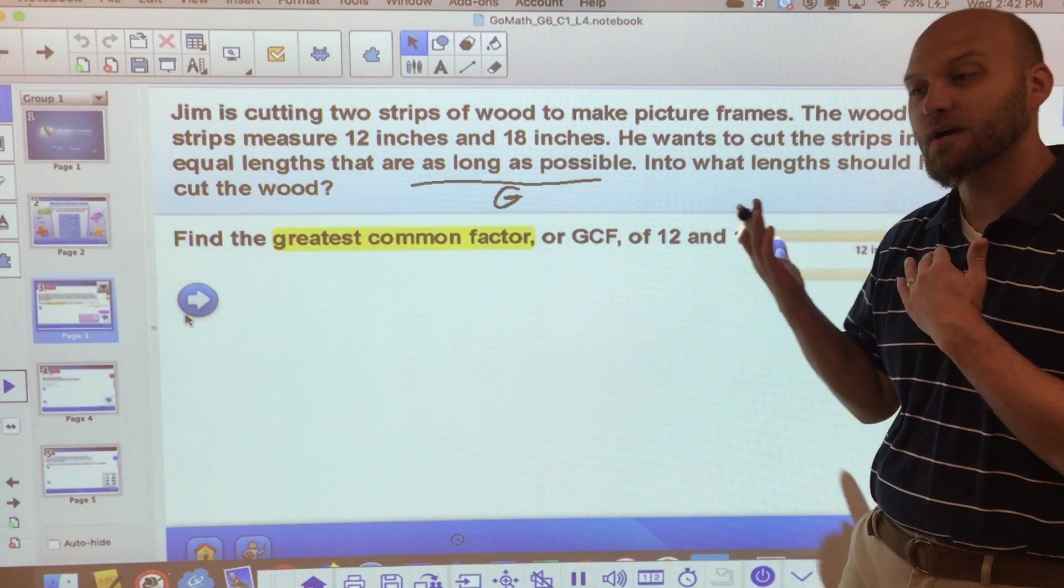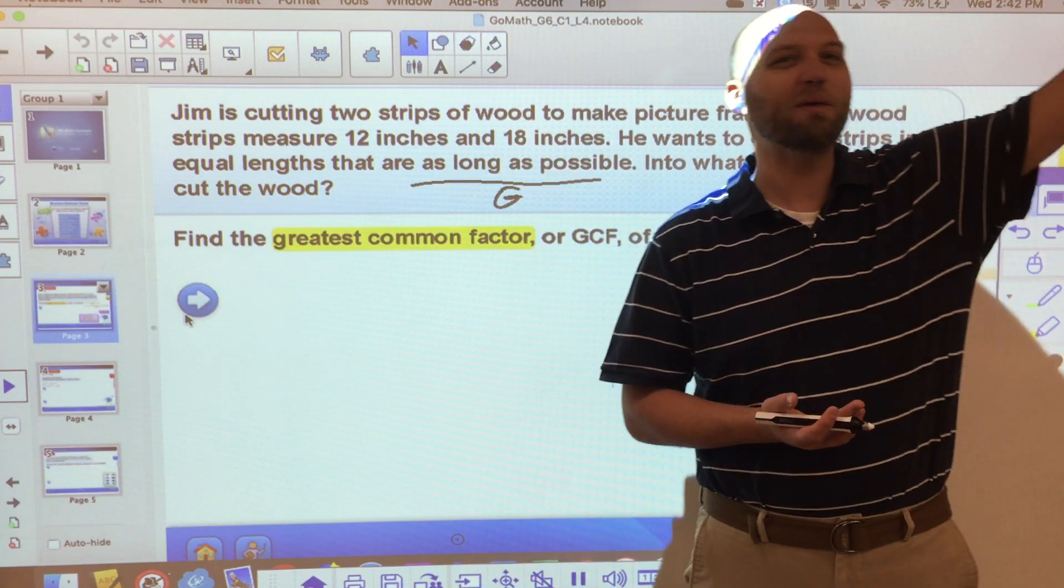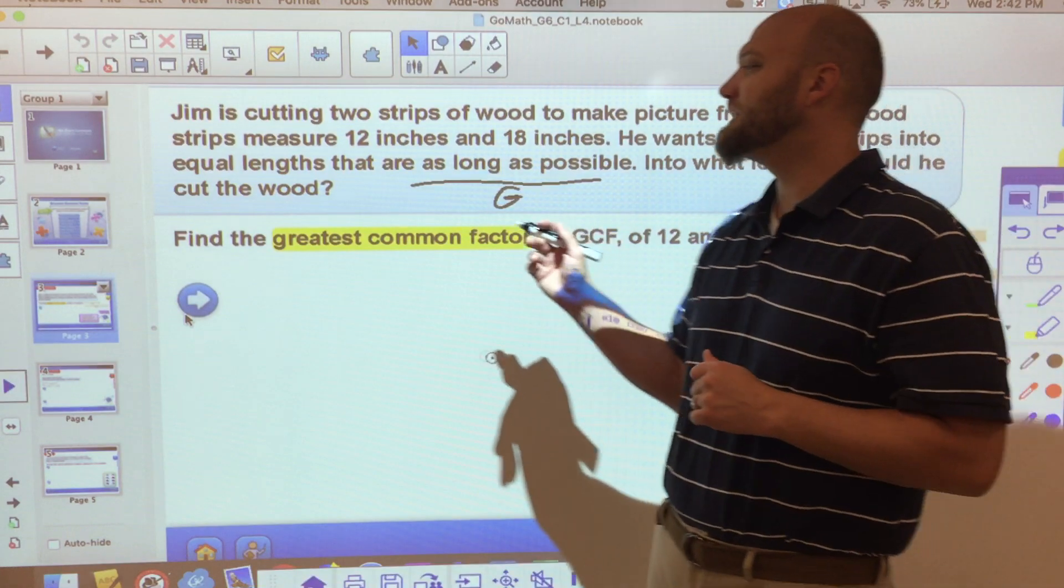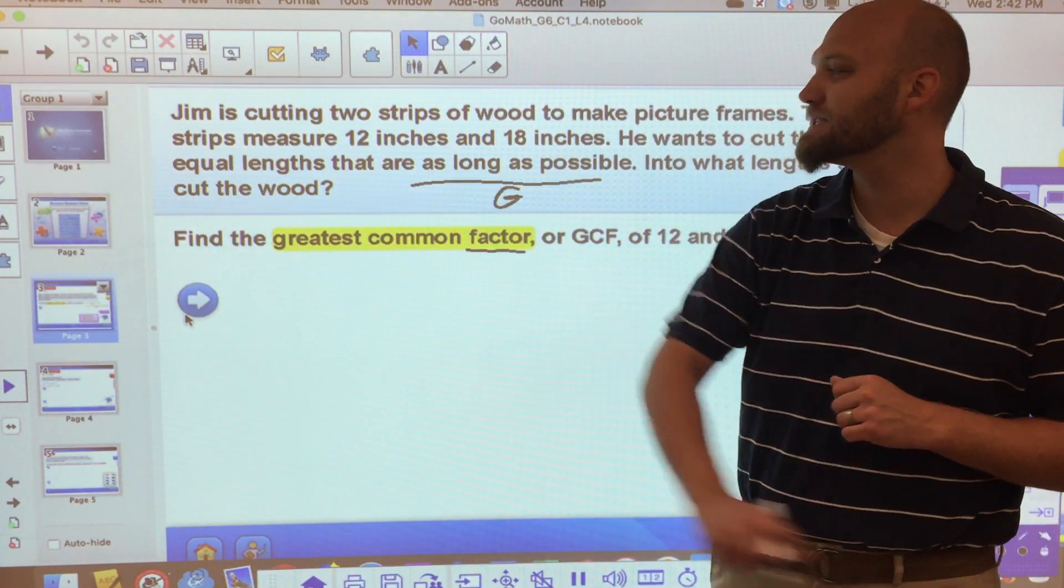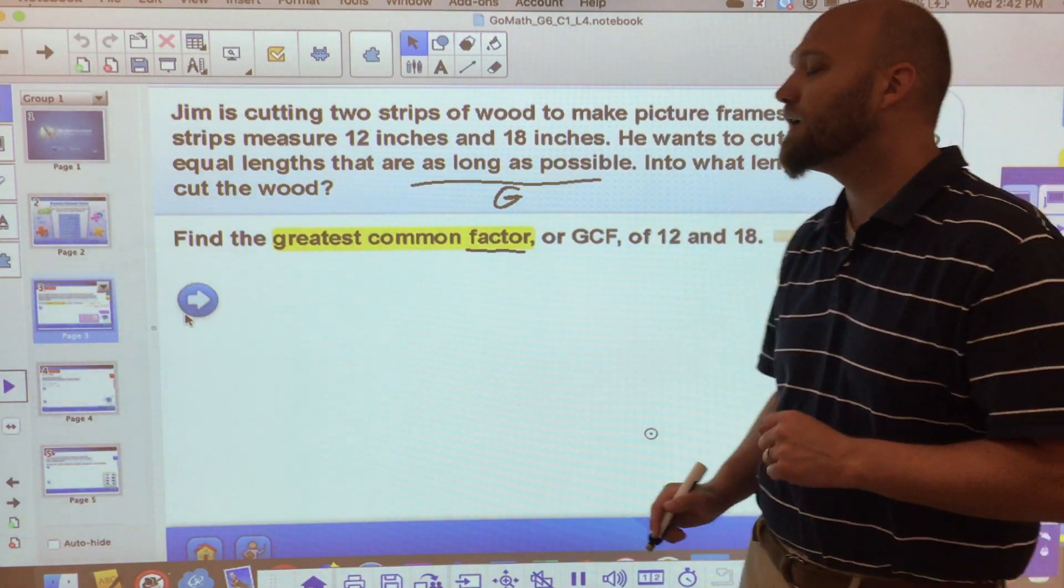Now, I'm not talking about greatest common multiple because those numbers will keep multiplying and going on and on. Greatest leads me to believe that we're looking at factors. And in fact, it does tell me to find the greatest common factor or GCF of 12 and 18.